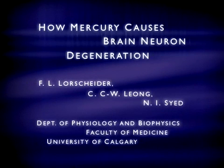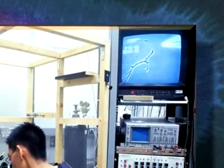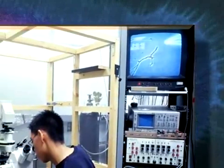How Mercury Causes Brain Neuron Degeneration. Mercury has long been known to be a potent neurotoxic substance, whether it is inhaled or consumed in the diet as a food contaminant.